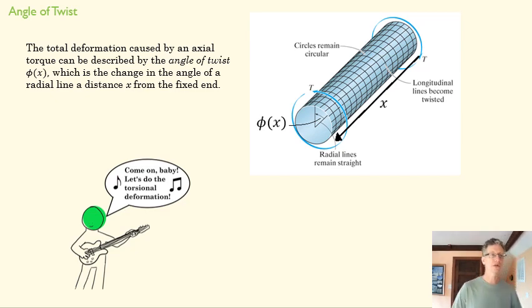The total deformation creates what's called an angle of twist. Instead of talking about a delta as a change in length like I did with normal forces, here we're talking about the deformation defined by this angle of twist at the end of this rod. This radial line will have turned that full angle there, and that tells us how much this piece is being torsionally deformed.